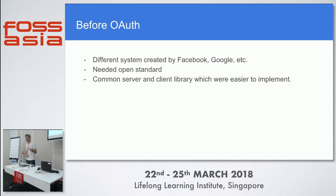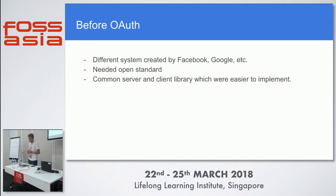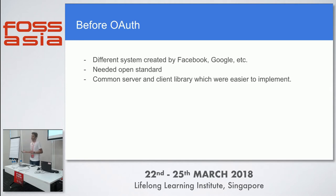There were no open standards for authorization before 2008. There were some systems created by Google and Facebook — Facebook used an MD5-related system — but there were no common open standards. If you had to implement your own authorization system it was a tedious task requiring a lot of planning and execution. There was no common library to create servers or implement authorization on websites.